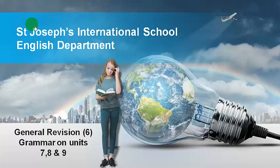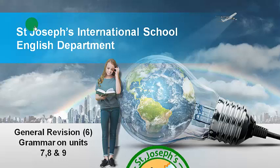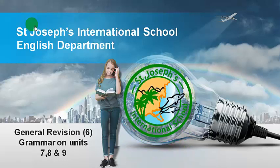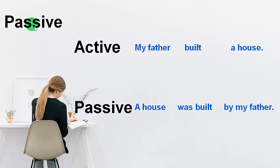Hello guys, welcome to another recorded video in our general revision series. Today we are going to talk about the grammar in units 7, 8 and 9. The first thing we have is the passive form — how to talk in the passive voice. And if you remember in the previous grammar video, we talked about the passive voice in the present and past simple tenses, also the present and past continuous tenses. Before we see what we are going to look at in this video, let's take a look at this sentence.